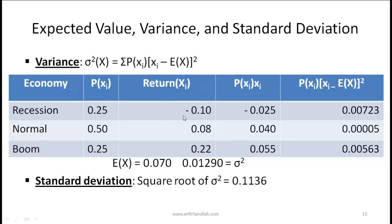To calculate the variance, you first need the expected return, which we've calculated as 0.07. Then for each state, you multiply the probability of that event by the squared deviation of the return from the expected value, and sum those products together.